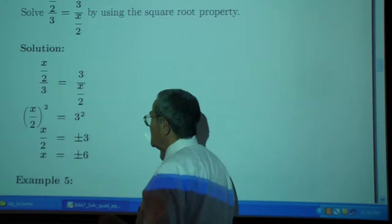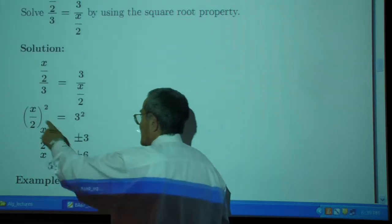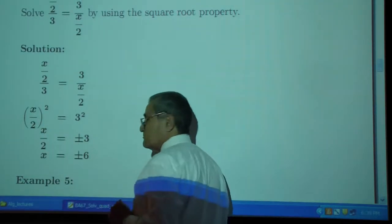Square root property. You take the square root on the left, you take the square root on the right. And if there's a variable here, don't forget the plus or minus.